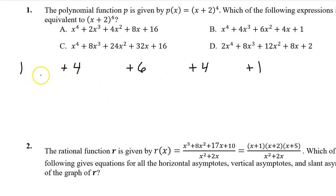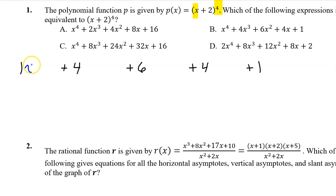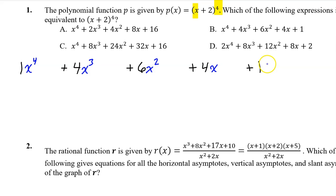Let's begin to build an expanded expression for p of x using the coefficients from Pascal's Triangle. We use the first term of the binomial to fill in factors from left to right. The first term will have a factor of x to the fourth power, and then it decreases in degree for each term. So the next term will have x to the third power, then x squared, then x to the 1st power, then x to the 0 power, which is just 1 and you don't need to write.